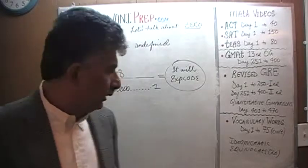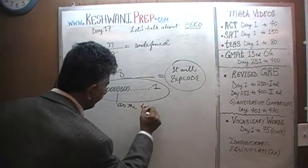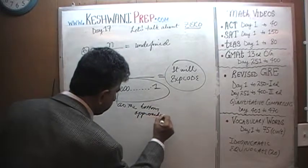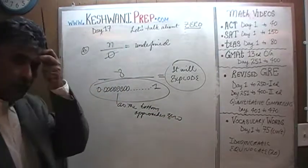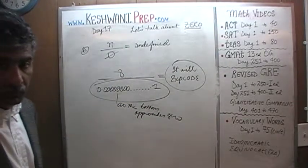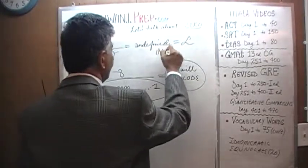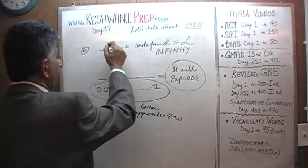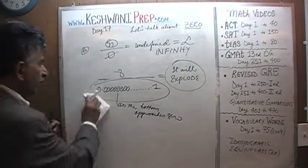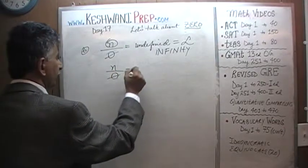As the bottom — the denominator — approaches zero, the result explodes. It becomes so huge we can no longer pinpoint it, define it, count it, or articulate it. As the denominator approaches zero, it becomes undefined. The term we use is: it becomes infinity. Any number divided by zero is infinity.